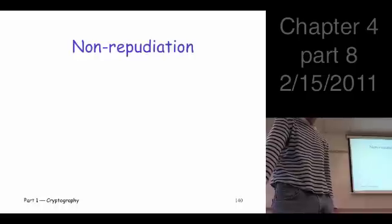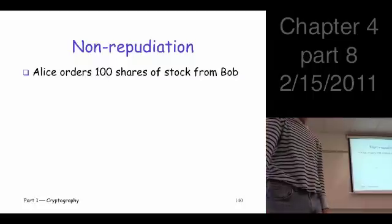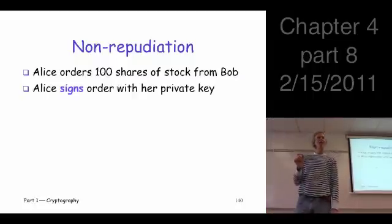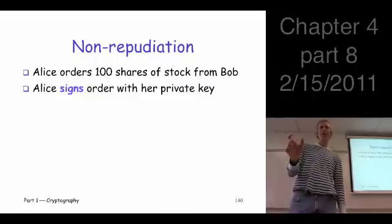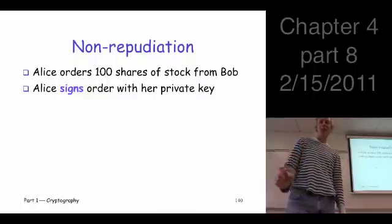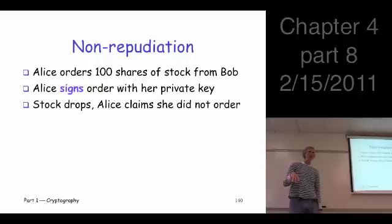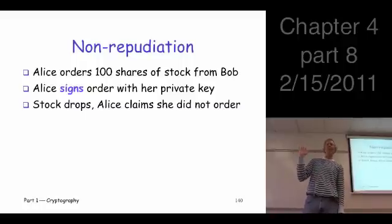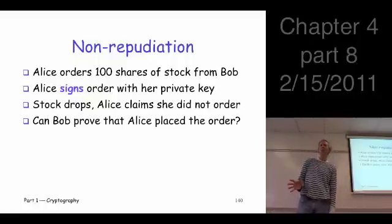Now let's do a similar thing here. Let's suppose similarly, Alice orders 100 shares of stock from Bob, but this time instead of computing a MAC, she signs the order, digital signature. So how do you sign again? Use her private key, so Alice uses her private key. Again, the stock drops before she pays for it, and Alice says, hey, I didn't place that order. Now, the question is, can Bob prove that Alice placed this order? Sure. Why is that?